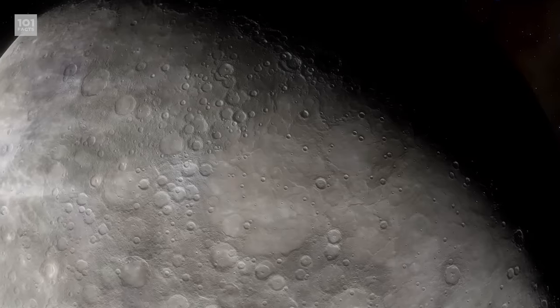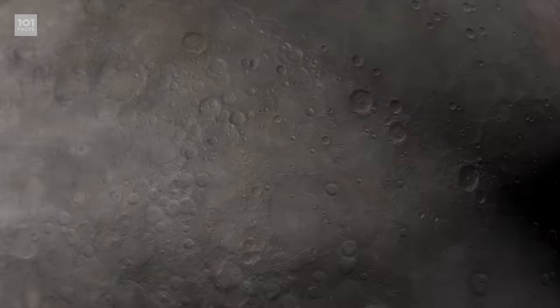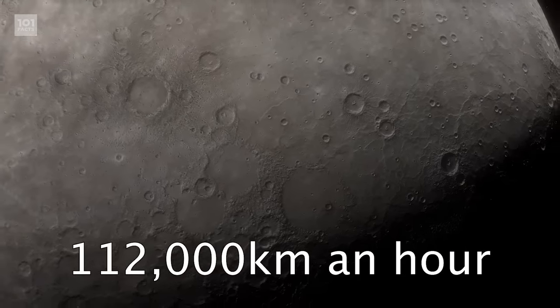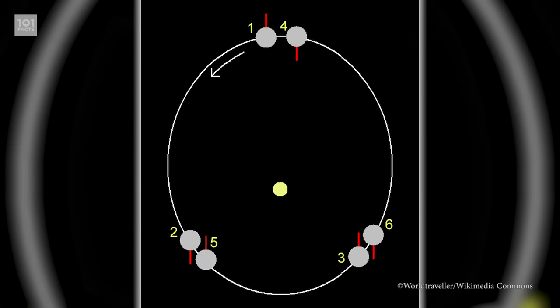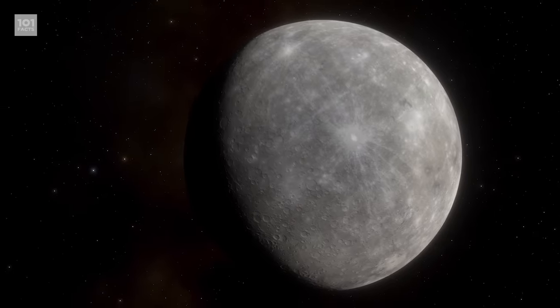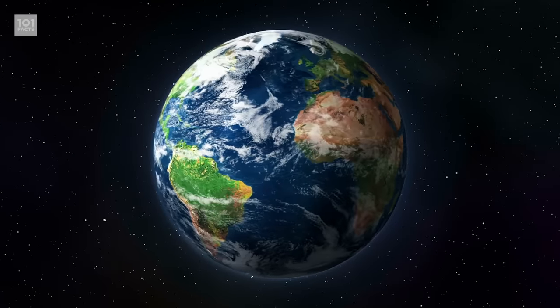A year on Mercury is only 88 days. The planet hurtles itself around the sun at almost 112,000 kilometers an hour, the fastest of any of our planets. This orbit is elliptical, so its distance from the sun can vary anywhere between 29 million and 43 million miles. To put that in perspective, Earth has a difference of around 3 million miles.